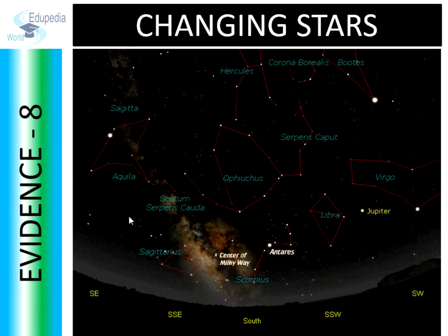Evidence 8: Observation of Stars in the Sky. If we move northward towards the pole, we will find that new stars and constellations will start appearing in the sky which were not visible when we were away from the poles. This suggests that these stars were hidden below the horizon when we were away from the pole. This would not have been possible if the Earth was flat.